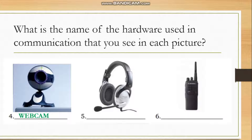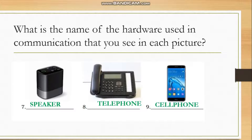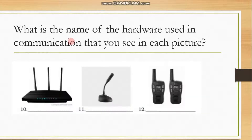Number five — it's a headset. Number six — it's a radio. It's not the usual AM and FM radio that you have at your homes. Number seven is a speaker. Number eight is a telephone. Number nine — the one that you're using is a cell phone. These pictures are really familiar with you. Number ten — it's a router.